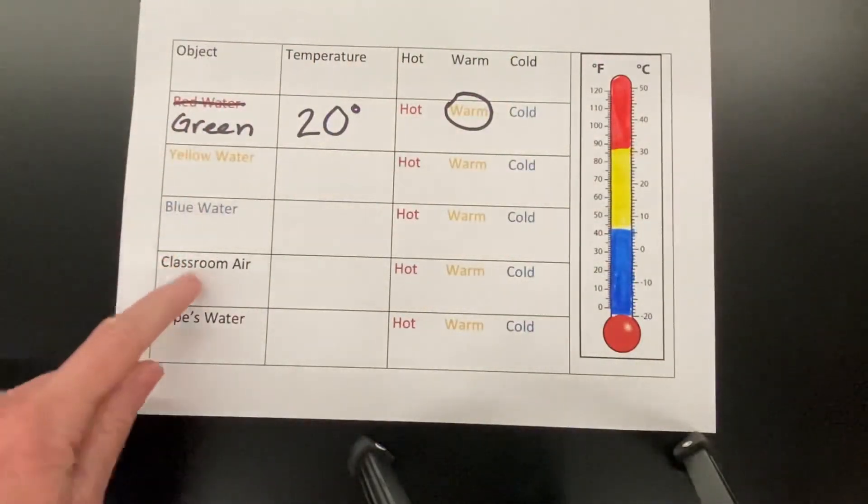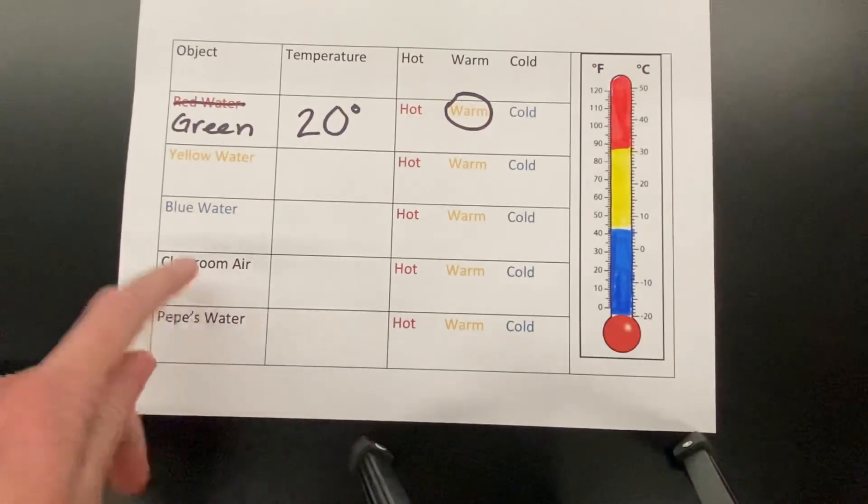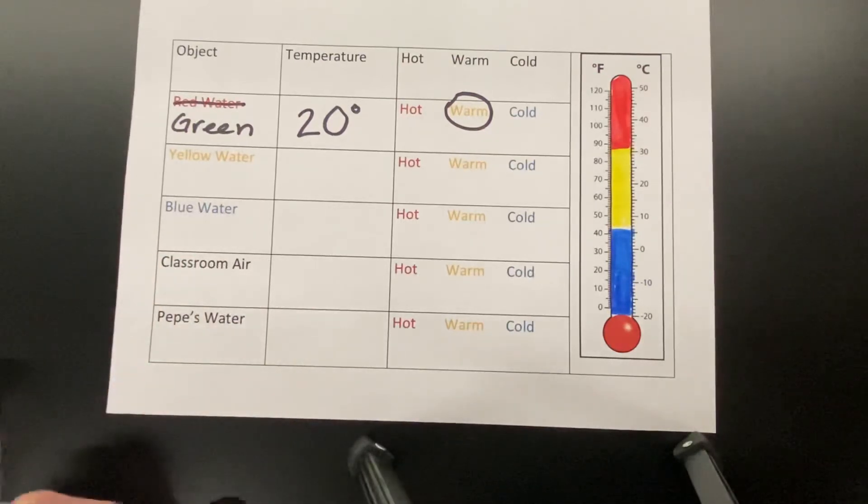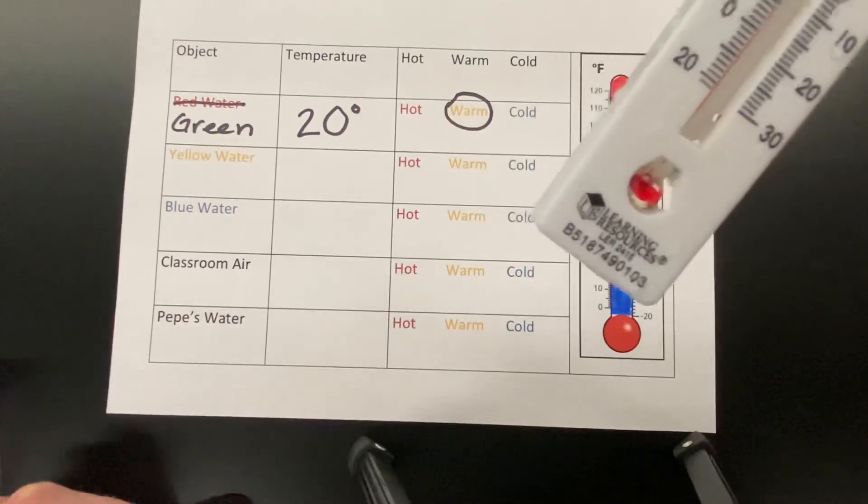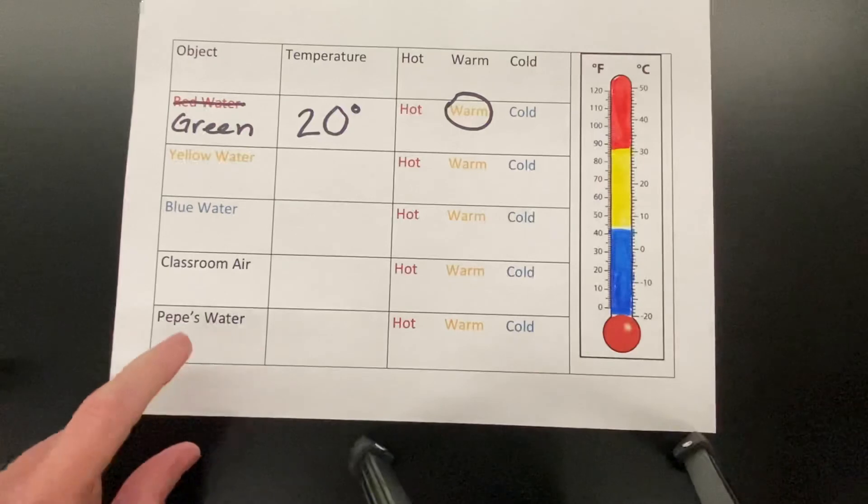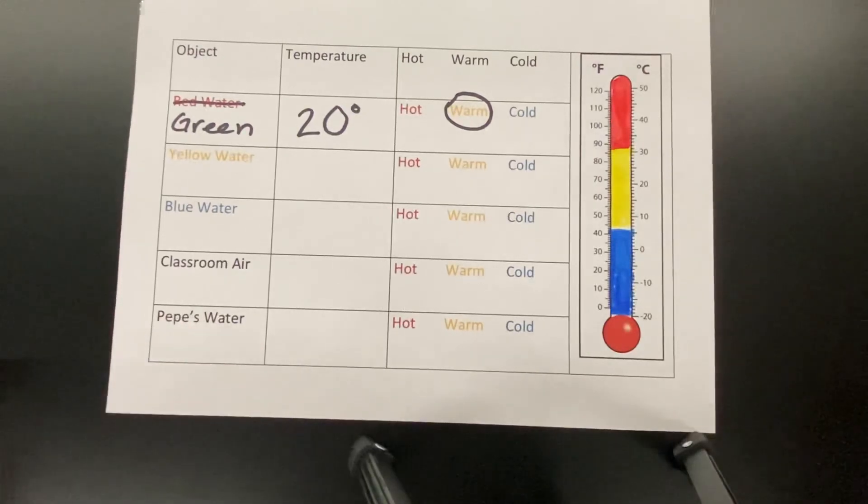Remember, when you do the classroom air, you just hold it up in the air and count to five and let the temperature adjust. And then we're going to have to change Pepe's water to something else. I'll bring you guys a surprise. Okay, bye-bye.